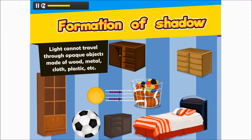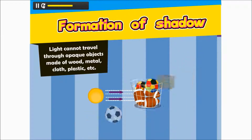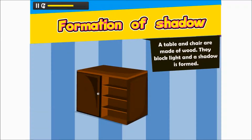Now let us find out how a shadow is formed. A table and chair are made of wood. They block light and a shadow is formed.